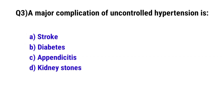Question No. 3. A major complication of uncontrolled hypertension is? The correct option is A: Stroke.